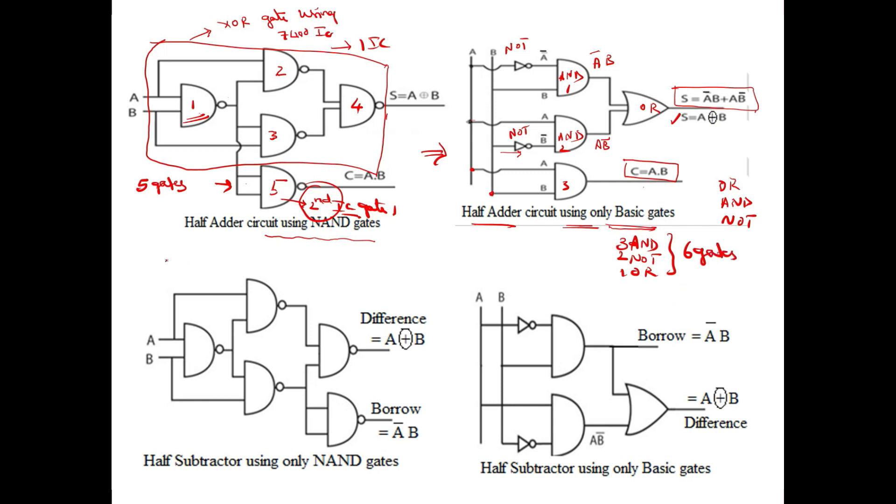On the same way for half subtractor, you can notice here this is the same as this. So 1, 2, 3, 4. This gives me XOR gate. This is the beauty of XOR gate - XOR gate gives sum as well as difference. So I can use the same XOR gate for sum as well as difference. This will give me the difference. Then borrow is A bar B. I am getting here the output. This one I need to tap. This is the 5th gate, that is this should be the 2nd IC, 1st gate. There is no compulsion that you have to use the 1st gate only. You can use any of the gates in the 2nd IC. But totally what it requires? It requires 5 gates as well as 2 ICs.